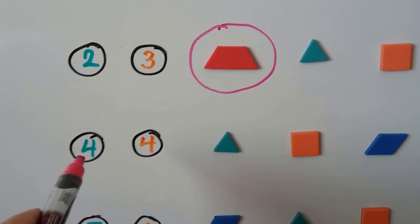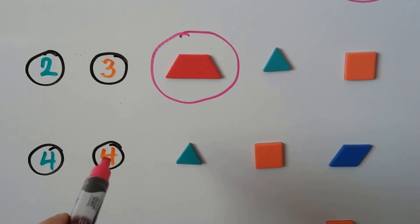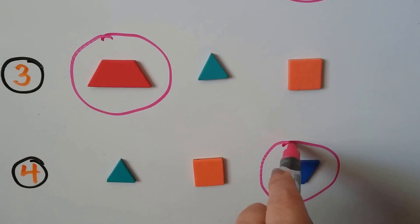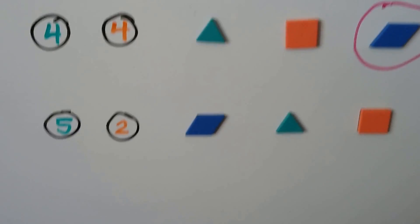What is at the point of the green 4 and the orange 4? It's a blue rhombus. Let's try one last one.